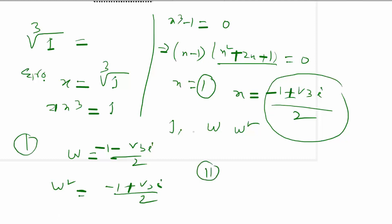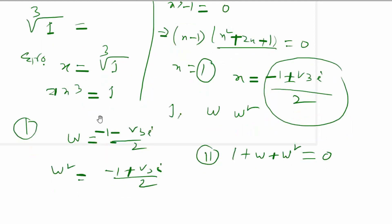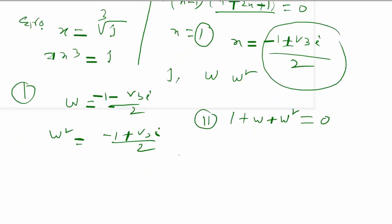So we have the property: 1 plus omega plus omega squared equal to 0. Using this, 1 plus omega plus omega squared equal to 0, so 1 plus omega squared equals minus omega, and omega cubed equals 1.